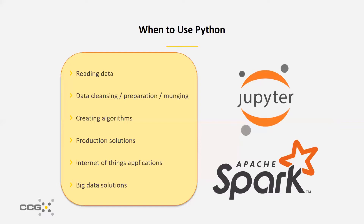Within all the packages available there are tons of different models and algorithms to use. If you find it necessary to write your own, the simple logic of Python makes it very easy to do so. And because Python backends exist so commonly in different applications and systems, if you're pushing a model into production on an existing system, Python is great for that because you likely won't have to install any new software. Nowadays there are tons of new smart devices and IoT applications, and Python has become a very popular choice for dealing with and analyzing the data that comes from these machines.